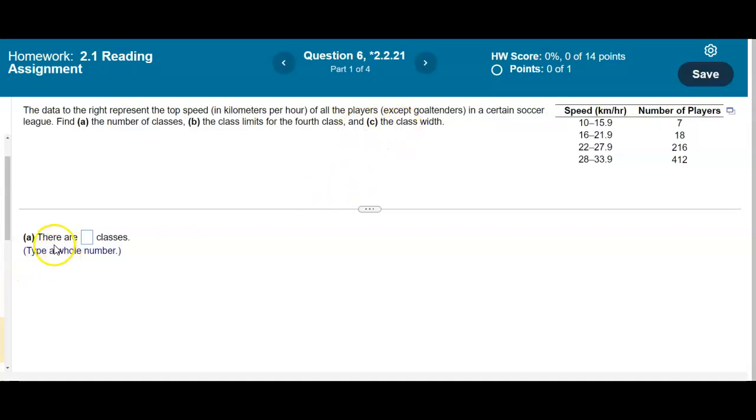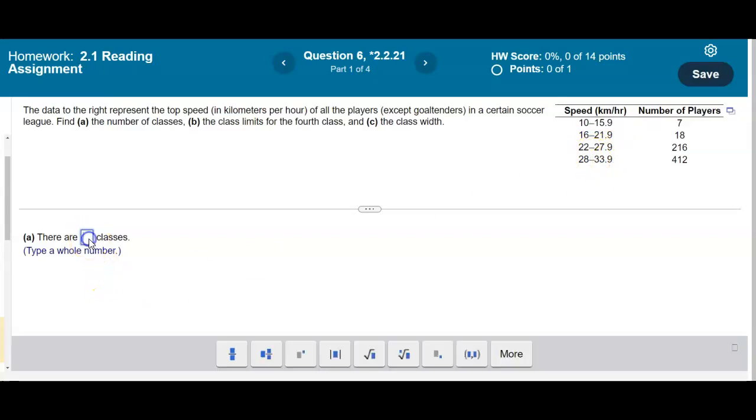Now the first part is if you want us to find how many classes there are. So if we look here we have one, two, three, four classes. So therefore there are four classes.